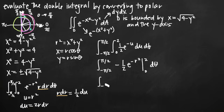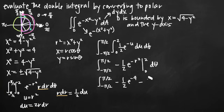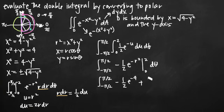Plugging in our limits of integration for r: with the upper limit 2, we get negative one half e to the negative 4, since 2 squared is 4. Subtracting the result at the lower limit 0: 0 squared is 0, e to the 0 is 1, times negative one half gives negative one half. So we subtract negative one half, which becomes plus one half. Our integrand is now negative one half e to the negative 4 plus one half, and we integrate that with respect to theta.